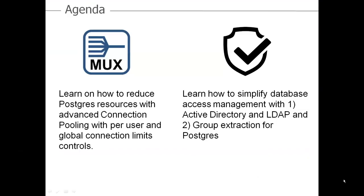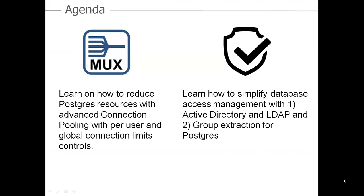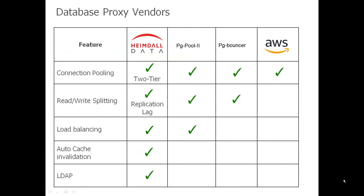You're going to learn how to reduce Postgres resources with our advanced pooling functions, with per-user and global connection limit controls, and you're also going to learn how to simplify database access management. This slide gives an overview of the various database proxy vendors in the marketplace. You're probably familiar with PG Pool 2 and PG Bouncer — they support a certain level of connection pooling.